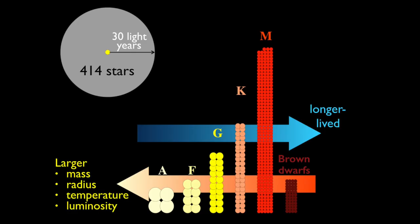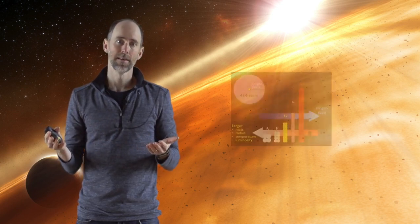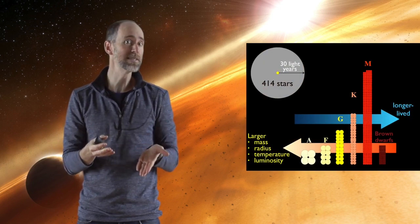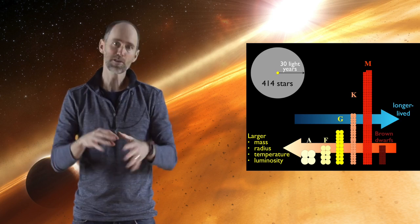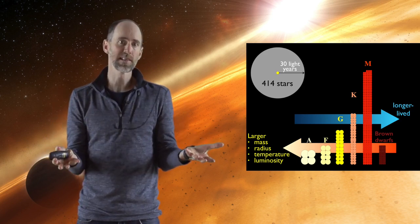To do this, the first step is to ask how common are Suns. If we take a ball 30 light years in size around the Sun, there's about 400 stars within that ball. This plot shows the distribution of different types of stars. Our Sun is a yellow G star, and you can see there's plenty of yellow stars within that ball.